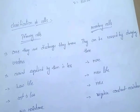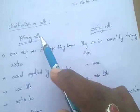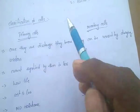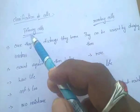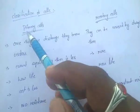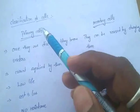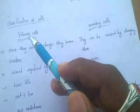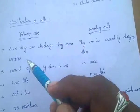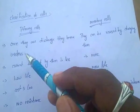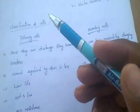Classification of cells: cells are mainly classified into two types — primary cells and secondary cells. Primary cells are use-and-throw cells. Once they are discharged, they become useless. That's why primary cells are called use-and-throw cells.